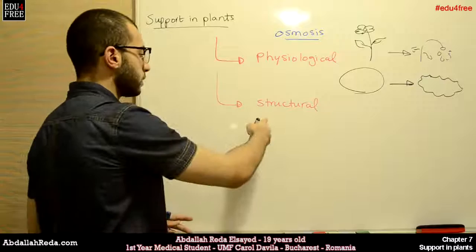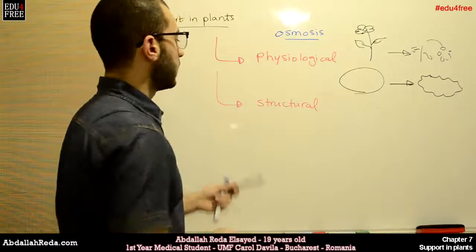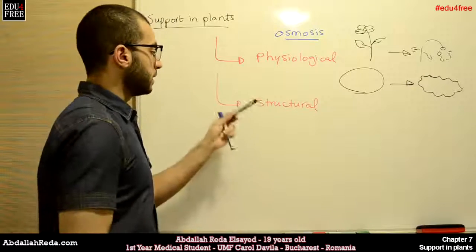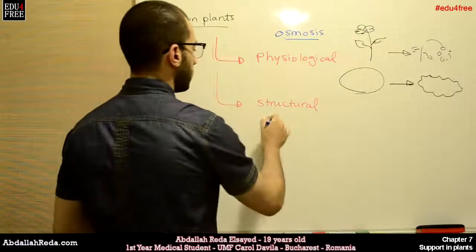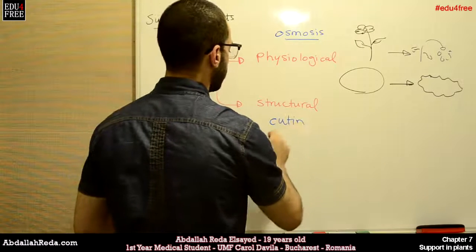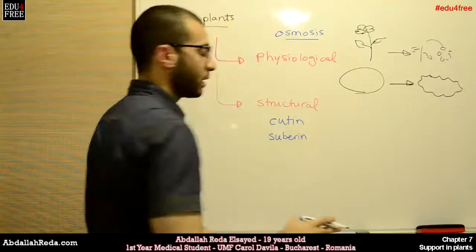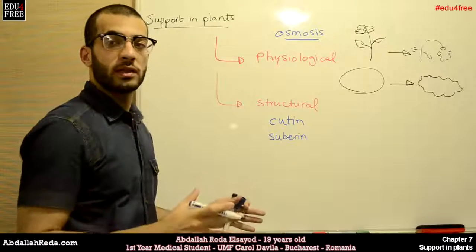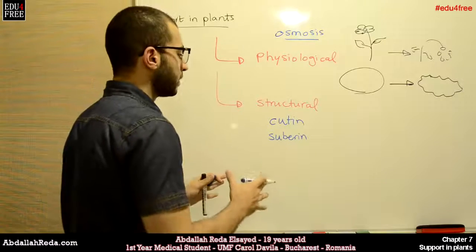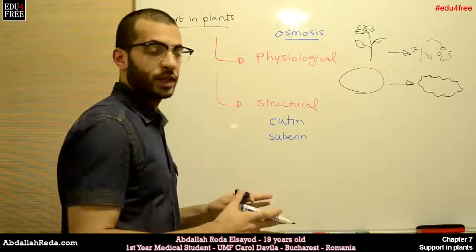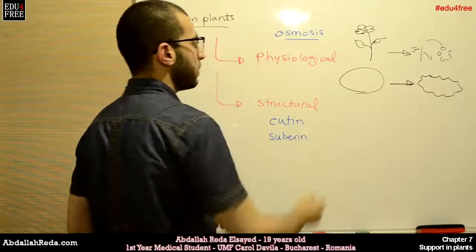For the structural support, on the other hand, as we mentioned at the beginning, it depends on the deposition of certain materials — for example, cutene or suberine. These materials are deposited on the cell walls or between the cells, and they strengthen the ability of the cells to maintain their shape, so that they don't collapse easily.